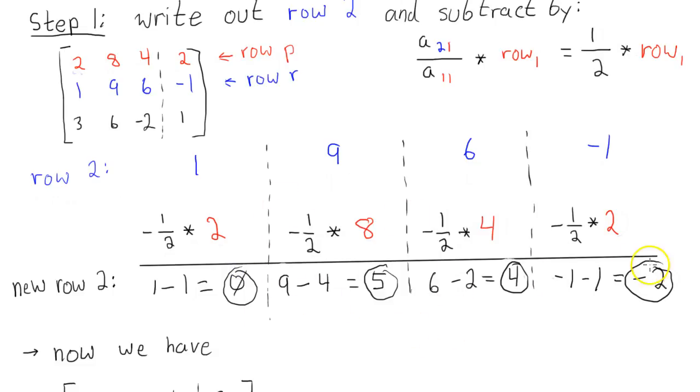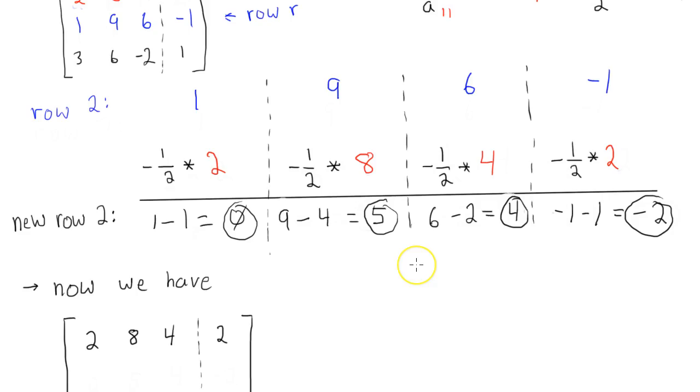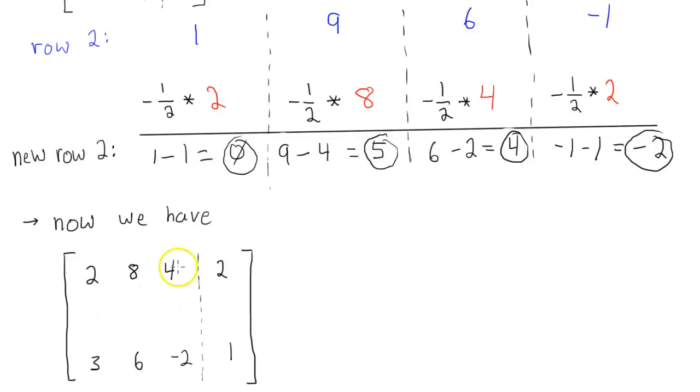Right here. Okay, so this is our modified row. So, we can come in here and now we have a 0, a 5, a 4, and a negative 2. And that's it for the first step.